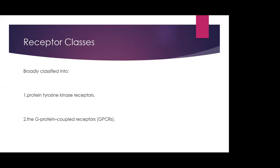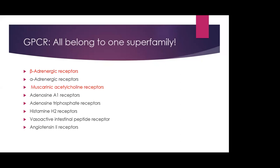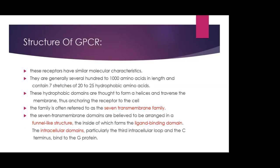Broadly, receptors are classified into two major classes: protein tyrosine kinase receptors and G-protein coupled receptors. G-protein coupled receptors are abundant, and in cardiac anesthesia we are daily dealing with these receptors through drugs. G-protein coupled receptors all belong to one super family. These include beta adrenergic receptors, alpha adrenergic receptors, muscarinic acetylcholine receptors, adenosine A1 receptors, adenosine triphosphate receptors, histamine H2 receptors, vasoactive intestinal peptide receptors, and angiotensin 2 receptors. Among these, beta adrenergic and muscarinic acetylcholine receptors play a major role in controlling the cardiovascular system.